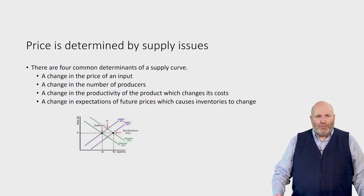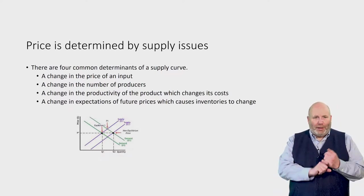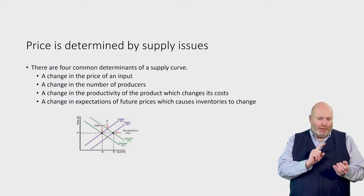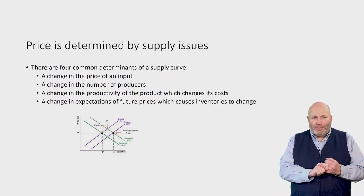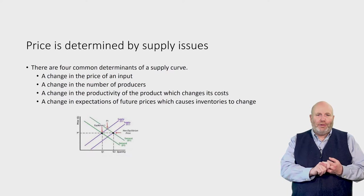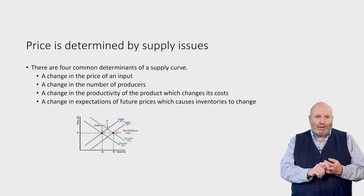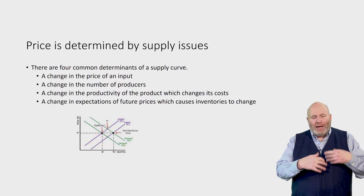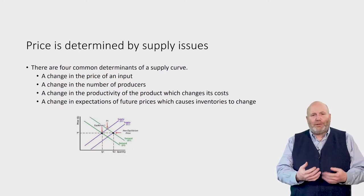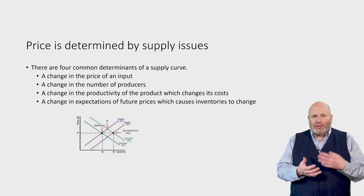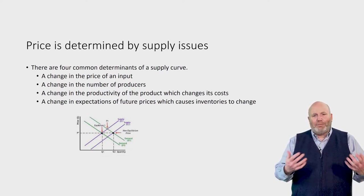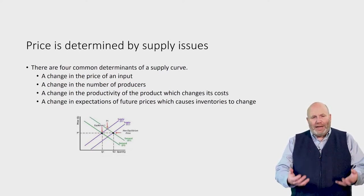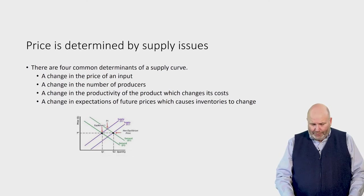We're going to talk about four of these: the price of an input, the number of producers, productivity — which can change cost — and the expectation of future prices. I'm going to give examples related to production and agriculture, but this applies to any firm in any single industry.